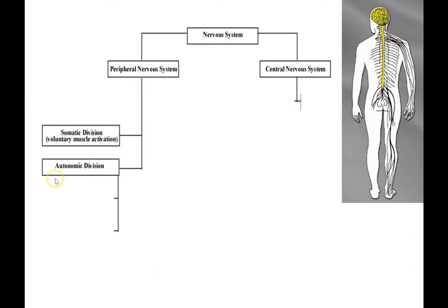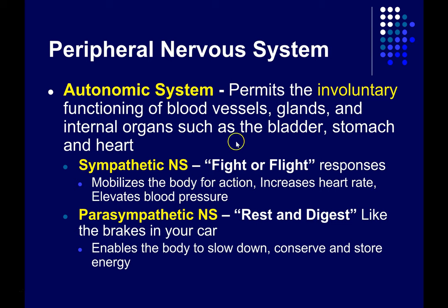Also in the peripheral nervous system is the autonomic division, which can be subdivided into the sympathetic and parasympathetic divisions. The autonomic nervous system overall permits involuntary functioning of blood vessels, glands, and internal organs like the bladder, stomach, heart, and digestive tract. You can think of the autonomic system as the automatic system — it takes care of lots of different bodily functions automatically, outside of conscious awareness for the most part.